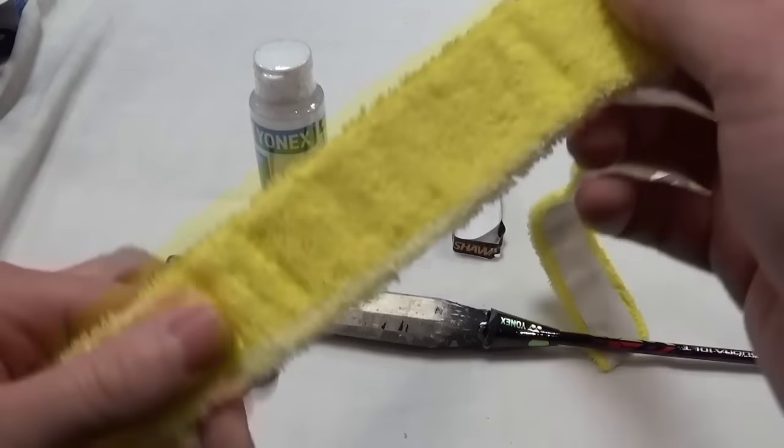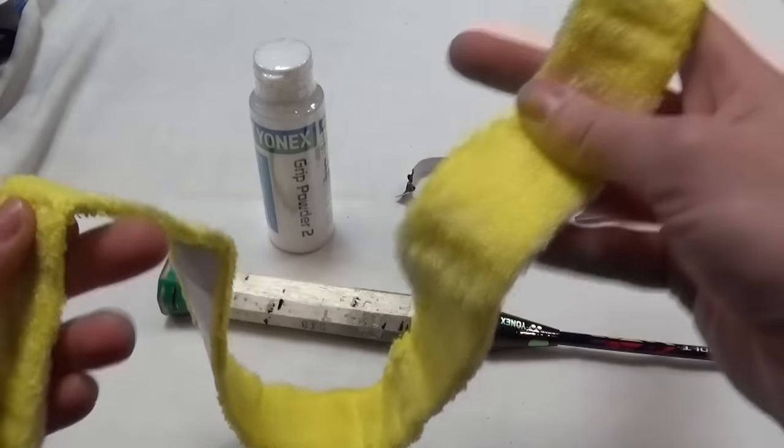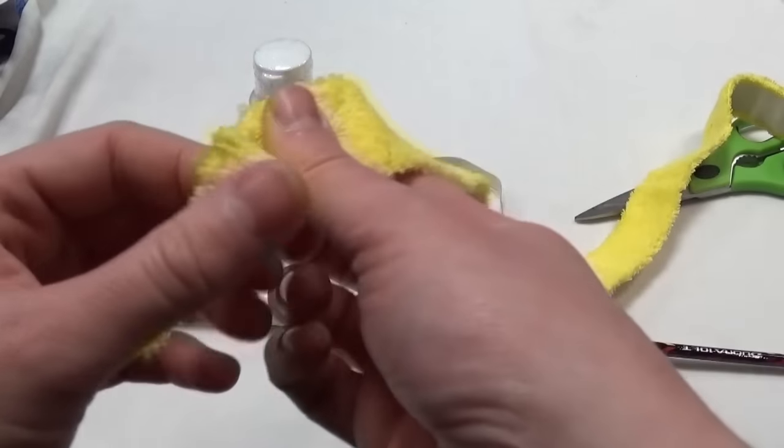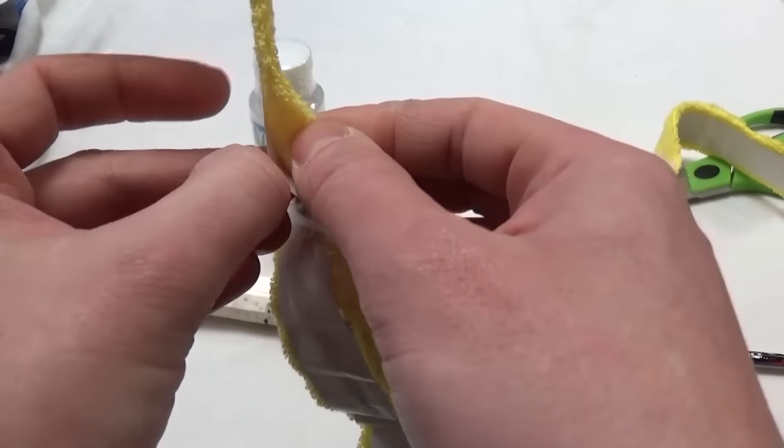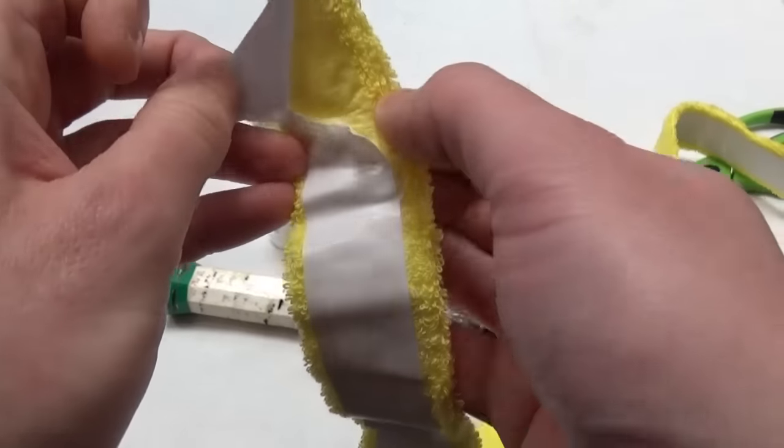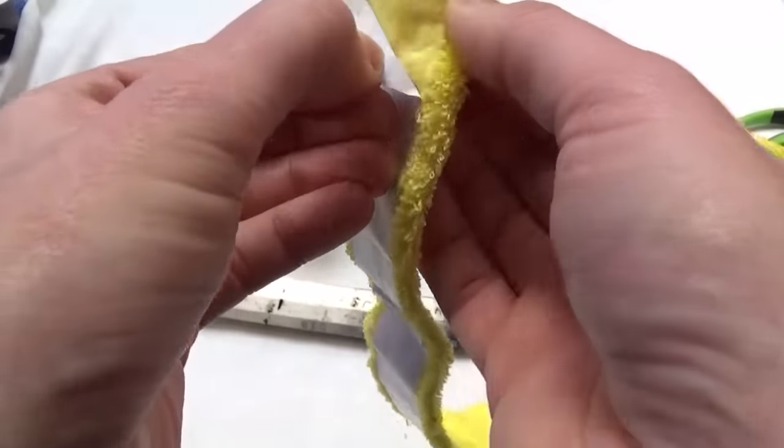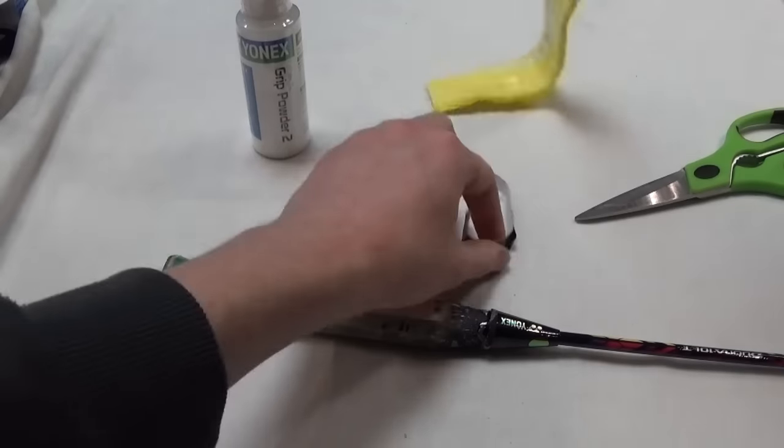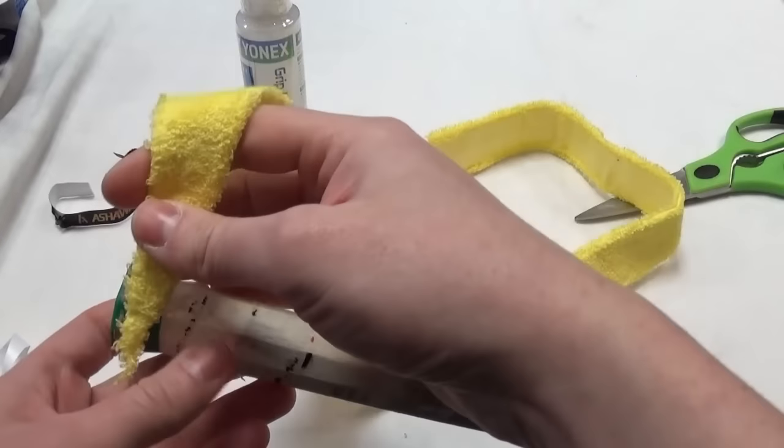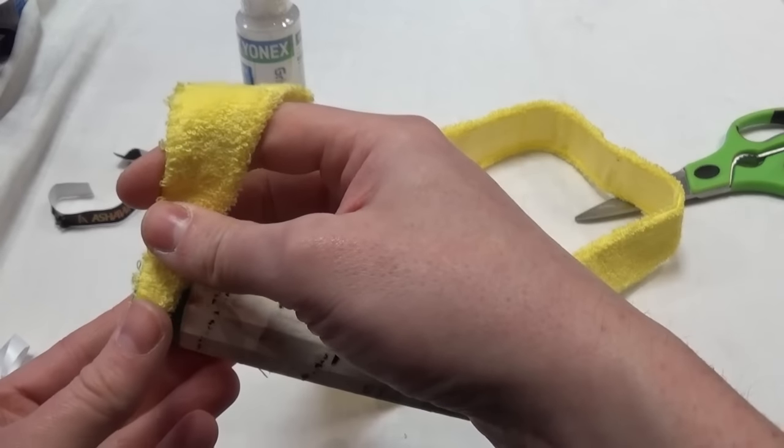So unwind it like any other grip. You'll notice they're quite a lot shorter. That's because they don't need to be overlapped at all. Take off the paper backing on the grip, ready to apply it to the racket and just do it in the same manner as the other grip.